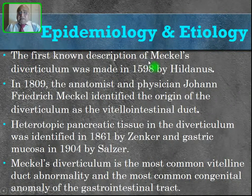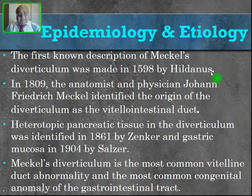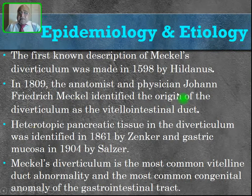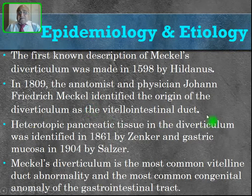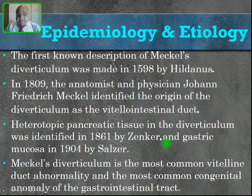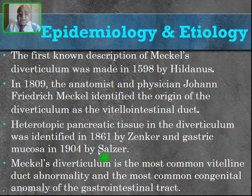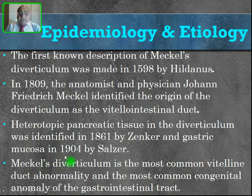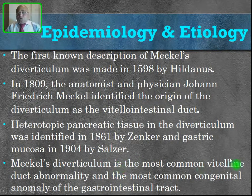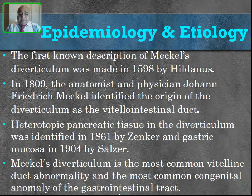The first known description of Meckel's diverticulum was made in 1598 by Hildanus. In 1809, the anatomist and physician Johann Friedrich Meckel identified the origin of the diverticulum as the vitelointestinal duct. Heterotopic pancreatic tissue in the diverticulum was identified in 1861 by Zenker, and gastric mucosa in 1904 by Salzer. Meckel's diverticulum is the most common vitelointestinal duct abnormality and also the most common congenital anomaly of the GI tract.